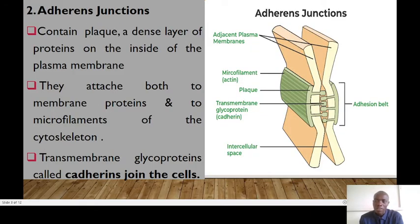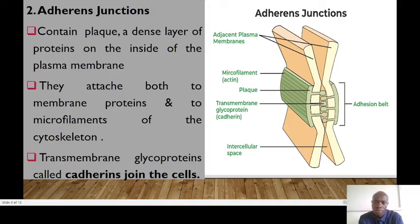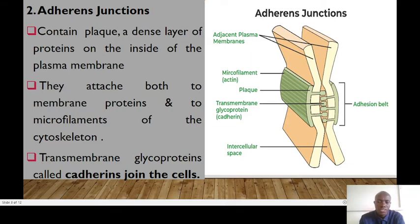Next we look at the adherent junctions. Adherent junctions are like studded ropes — they anchor cells together. We have cadherin proteins linked to actin filaments that provide mechanical strength and adhesion between adjacent cells, particularly in epithelial and endothelial cells. As nurses, understanding cell junctions helps us to appreciate the importance of tissue integrity in wound healing and preventing infections. The transmembrane proteins here are the cadherins which join our cells together.